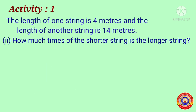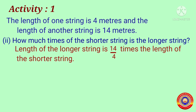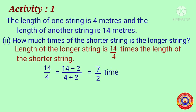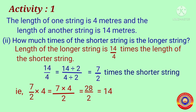Next question: how many times the shorter string is the longer string? We find the length of the longest string with respect to the shortest string. The length of the longest string is 14-by-4 times the length of the shortest string. In lowest form, 14-by-4 equals seven-by-two. That means it is seven-by-two times the shortest string. That is, seven-by-two multiplied by four equals 28-by-2, which equals 14.